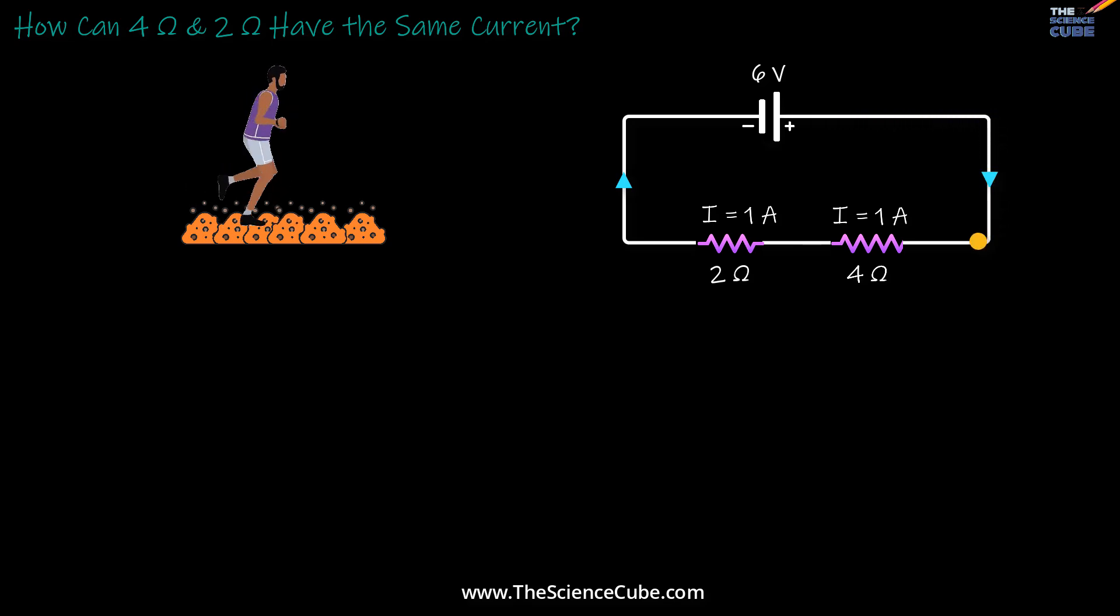We've all heard that the current in every resistor in a series circuit is the same. But I would ask, why doesn't the current in this 4 ohm resistor drop, given the motion of the charge, which is essentially current, is facing more resistance?